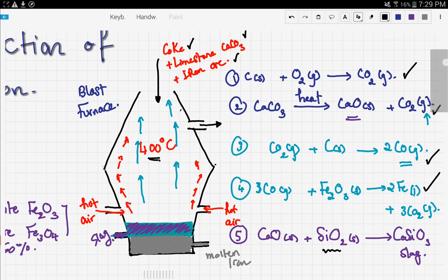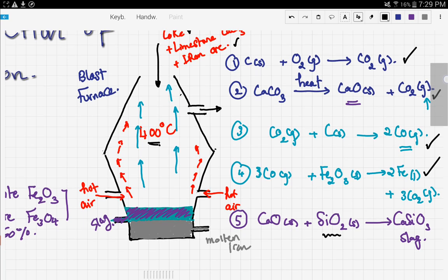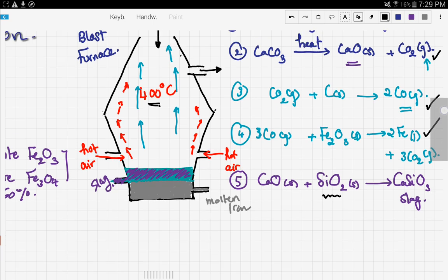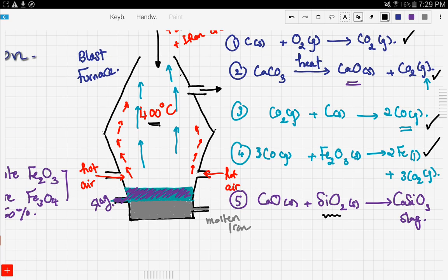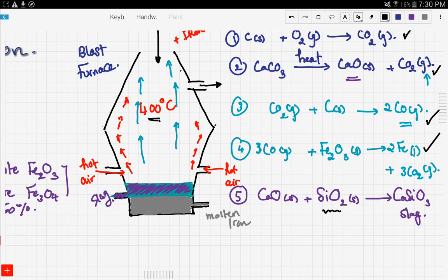The slag is often used in making roads, so it doesn't go to waste. We get our molten iron; it's collected right here. There will be buckets or something here used to collect the slag and the molten iron.